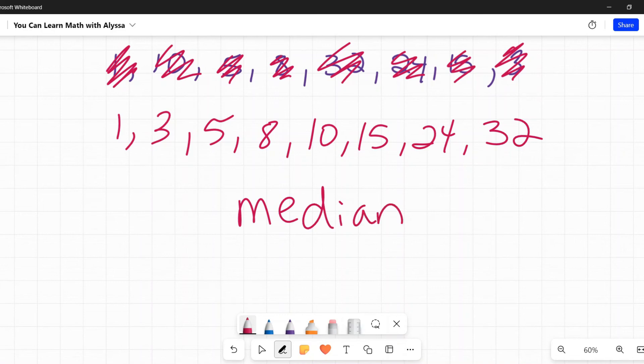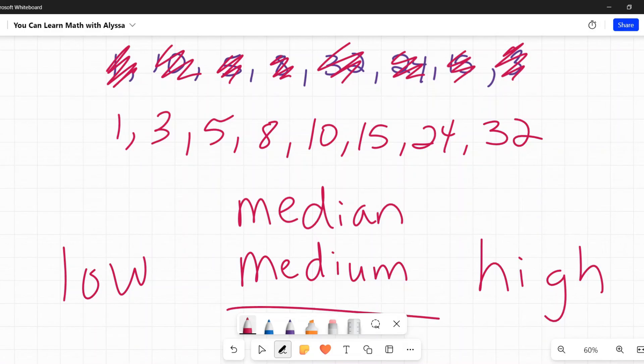Median sounds like and starts the same as medium. And when you have like on a stove or like your air conditioning unit or something, we have low, medium, and high. Medium is always in the middle. It's the one right in the middle. It's the Goldilocks. It's not too cold. It's not too hot. It's just right. It's median. It's medium. It's right in the middle. Median, medium, middle. So it's a number that's right in the middle. That's for median.